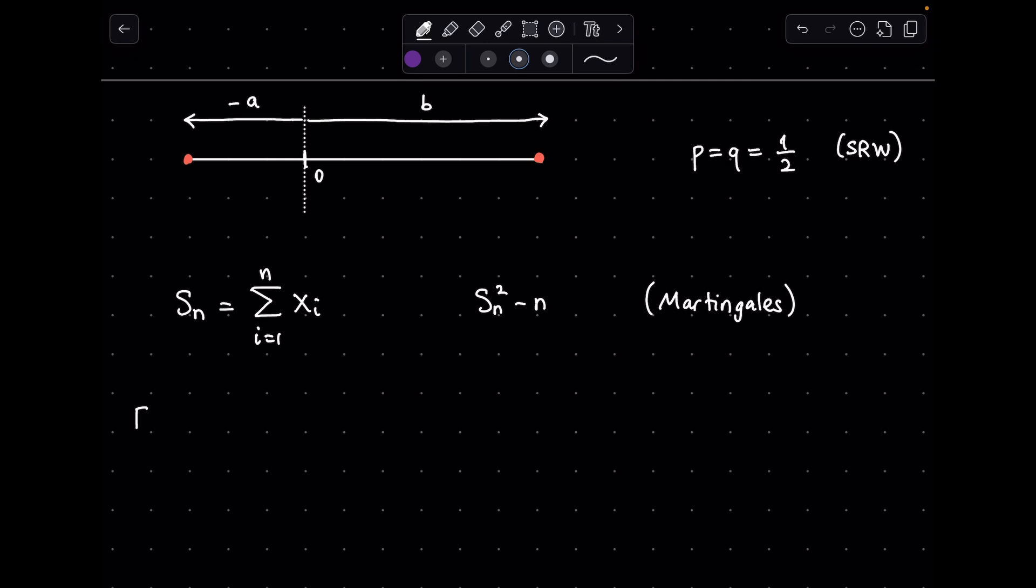Now, let me take the expected value of s_m, where this s_m represents the terminal values at the edges of the bridge. Given that we start at s_n equals 0, which is the current value, we can expect this expectation to be 0 as well, due to being a Martingale.